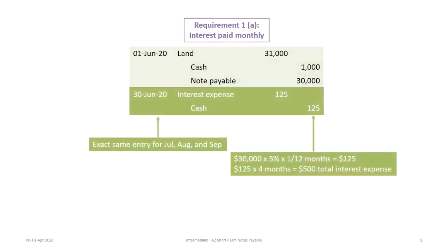Our next journal entry records the first of four monthly interest payments. On June 30th, we debit interest expense for $125 and credit cash for $125. This is calculated as the $30,000 principal balance at 5% — remember, quoted interest rates are always annual — so 5% per year multiplied by 1/12 months gives us $125.